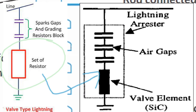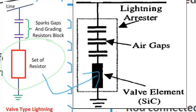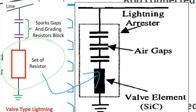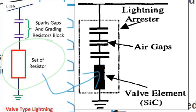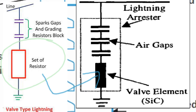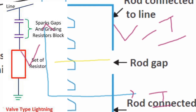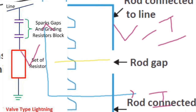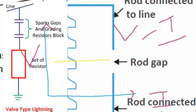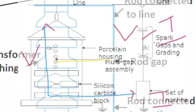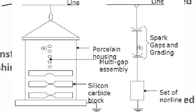It consists of three non-linear resistors in series. The voltage-current characteristic is an almost flat curve. This picture shows the full internal and external structure of the valve type lightning arrestor.